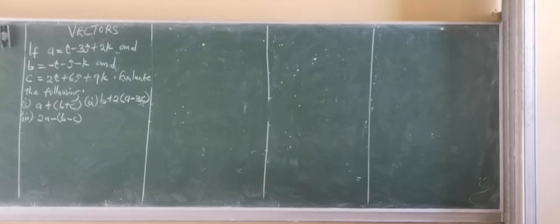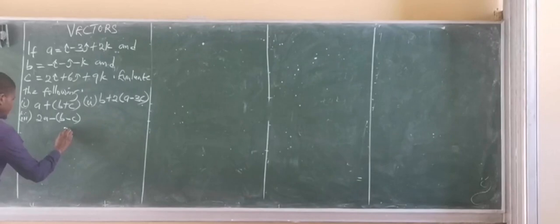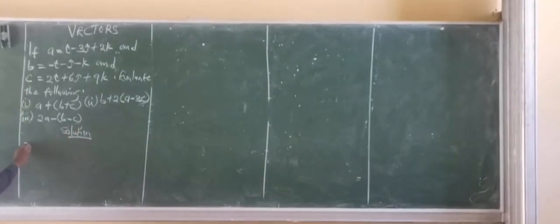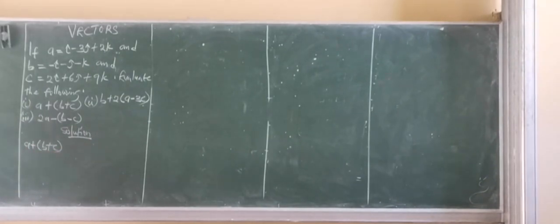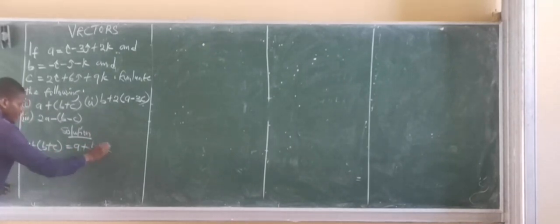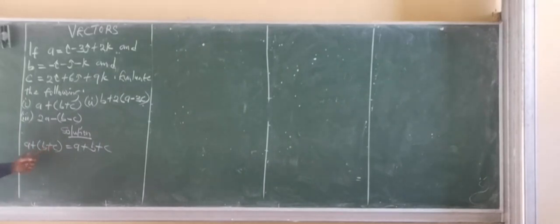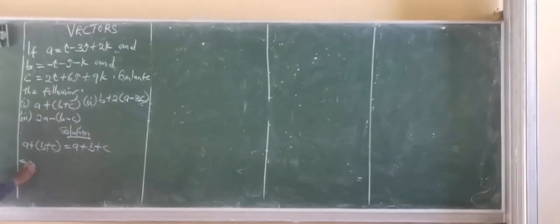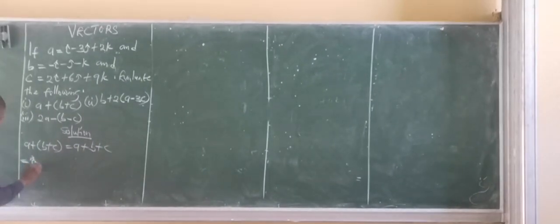First, let's evaluate A plus B plus C. So let's start with the first one. I have actually evaluated A plus B plus C. To carry out this, we put in the values of the vectors. Vector A is I minus 3J plus 2K, so in place of A, I have I minus 3J plus 2K.